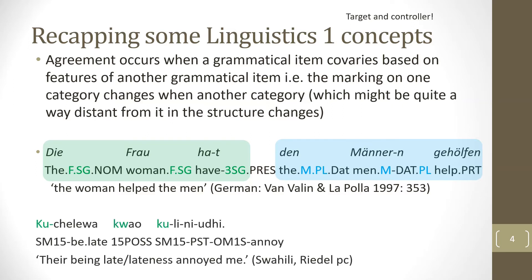Another example from Swahili meaning 'their lateness annoyed me' shows that Swahili agrees in terms of noun class. Here noun class 15 triggers agreement. The de-verbal noun meaning 'being late,' a kind of gerund, has noun class marker 15, ku, on it, which triggers noun class 15 agreement on the possessive. These two words together constitute the subject noun phrase, which triggers subject agreement for noun class 15 on the verb.